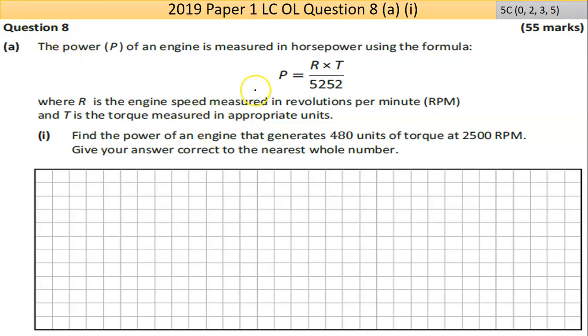So we're on Question 8 here. Part A is fairly easy, it's worth 5 marks. You're told here the power P of an engine is measured in horsepower using the formula here. So P stands for power, R stands for the engine speed measured in RPM, and T is the torque measured in appropriate units.